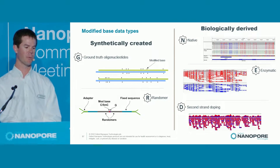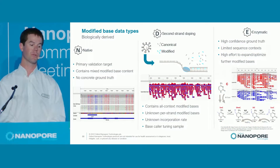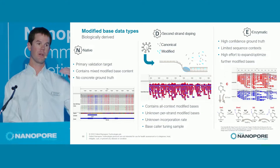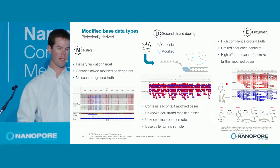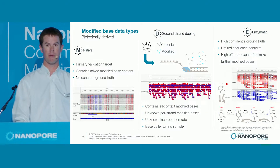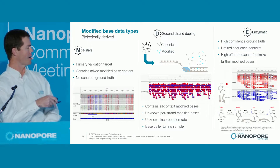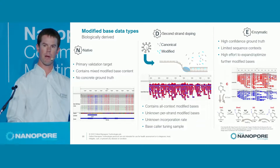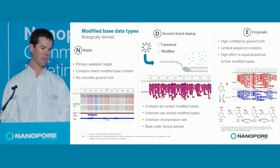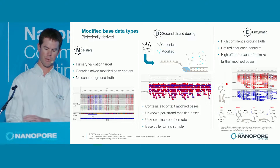I want to go over the modified base types that we use. There are five types of samples used for modified bases. I'll first go into the biologically derived ones. Native samples are what we target — that's what we want to do best on — but they're very hard for training and evaluation because they have mixed modified base content and no concrete ground truth. In the IGV plots shown here, red colors are modified bases at 5-MC and blue is the canonical C.